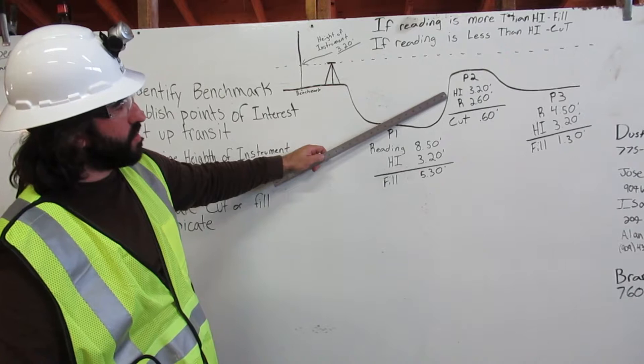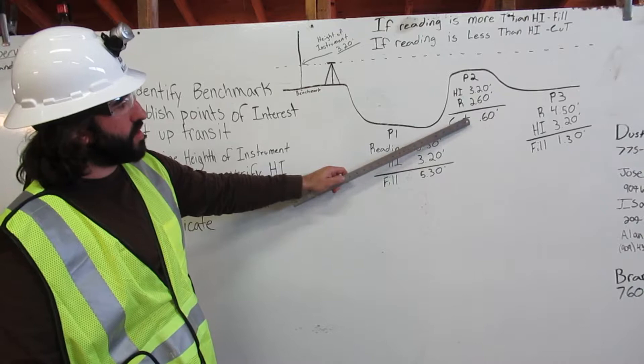At point two, our height of instrument is 3.20 feet and our reading was 2.60 feet. We are going to subtract those and get 0.60 feet and we are going to cut.